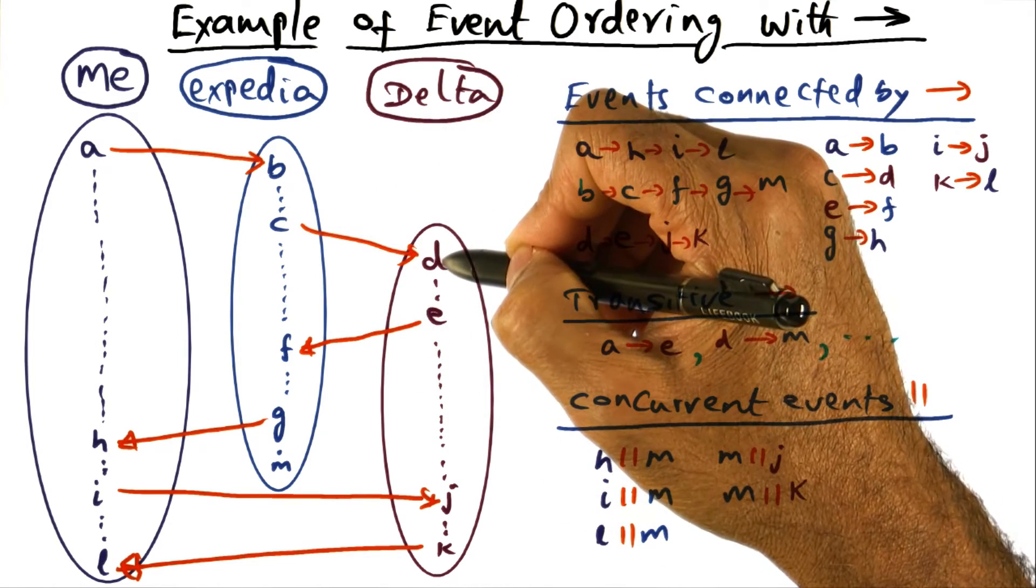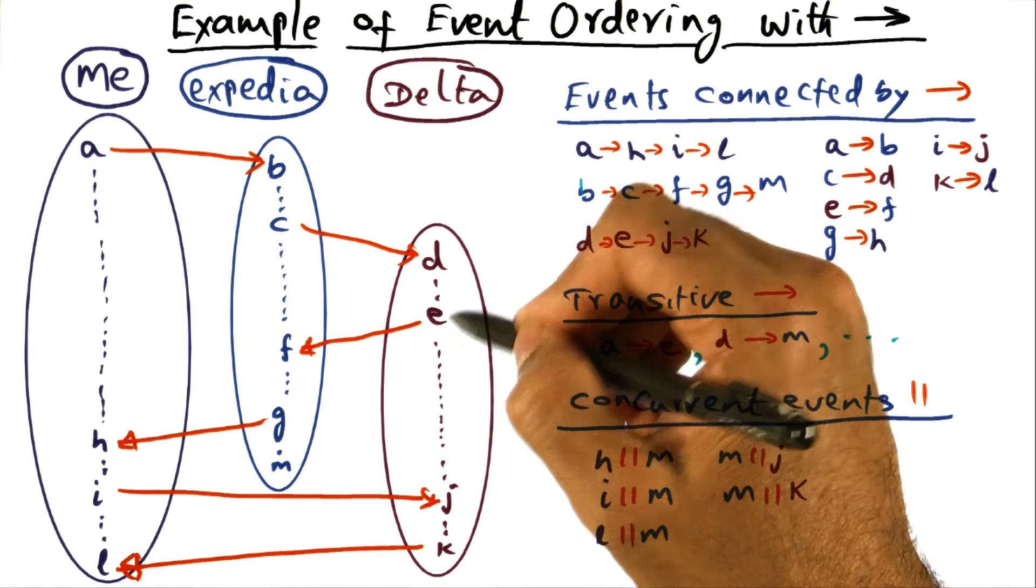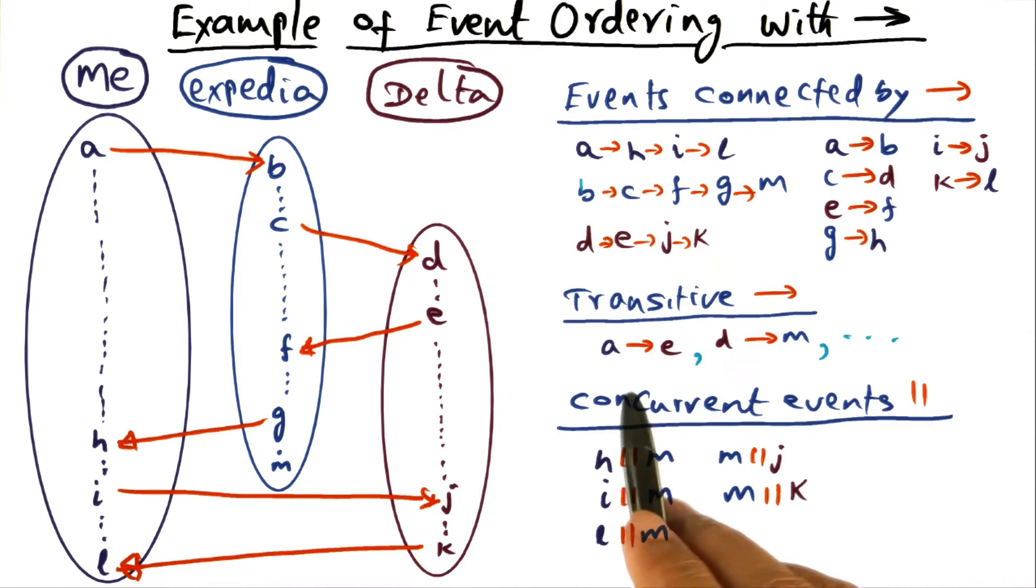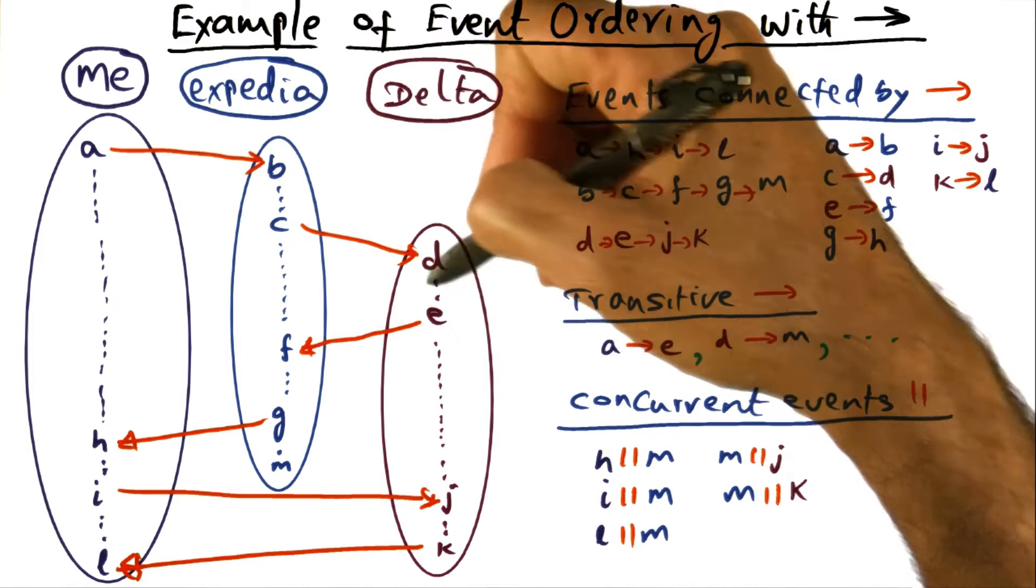And of course, C happened before D. So since it's a communication event, sequential process, D should have happened before E. And that's what gives the transitive relationship between A and E.